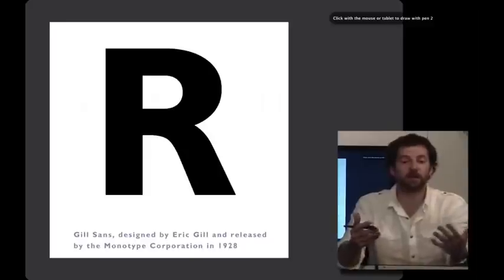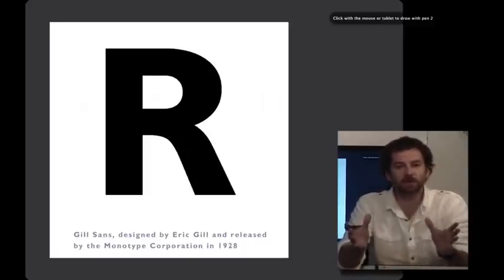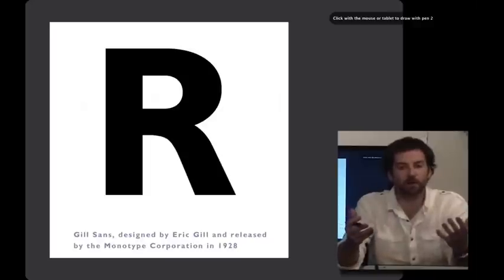Gill Sans was designed by Eric Gill and released in 1928. There's a couple of things that I'd like to point out about this letter right here. One of them is that it has the perceptual characteristic of being consistent weight all throughout.